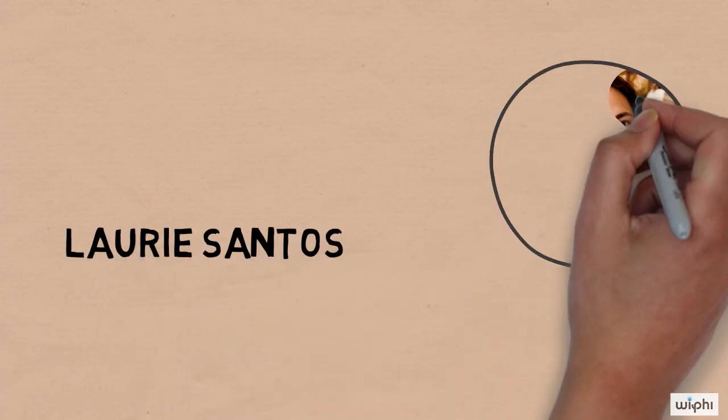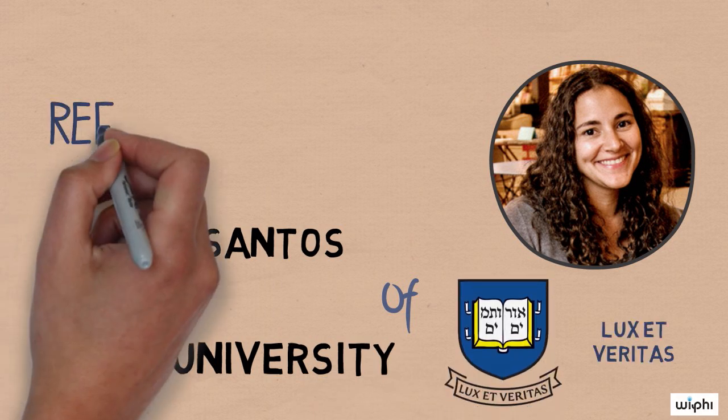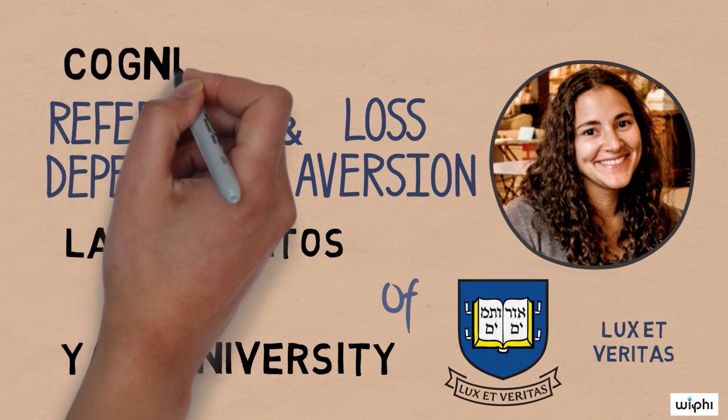My name is Laurie Santos. I teach psychology at Yale University, and today I want to talk to you about reference dependence and loss aversion. This lecture is part of a series on cognitive biases.